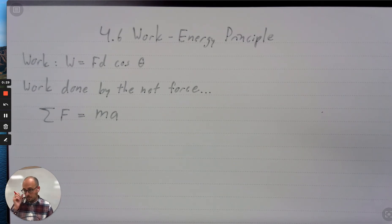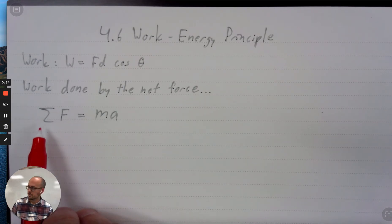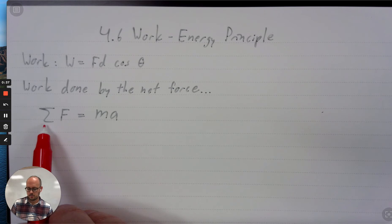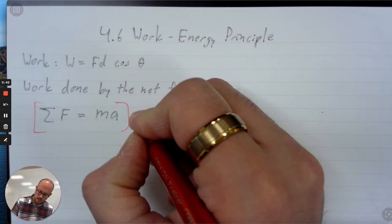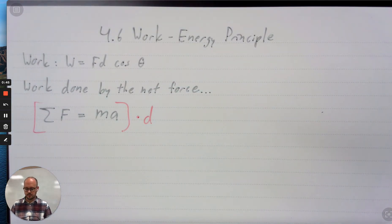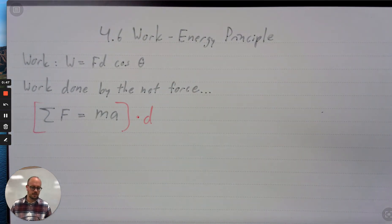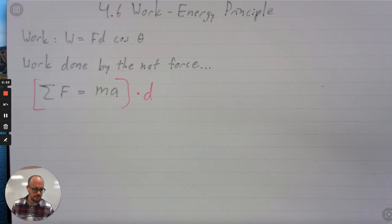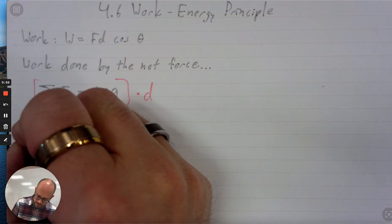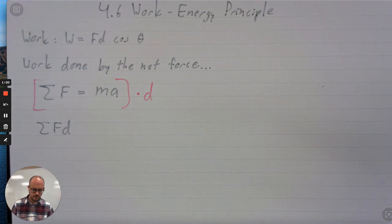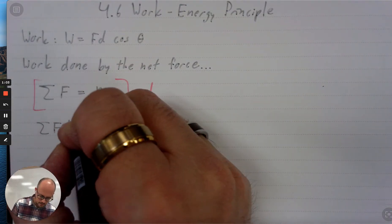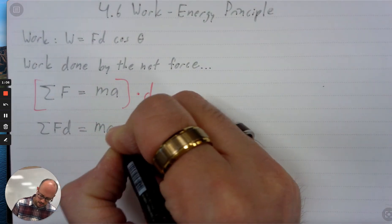And so kind of the way this is derived is a calculus idea, but the way we're going to do is just multiply. So net force equals mass times acceleration. I'm going to take that entire equation and multiply it by a distance. In other words, if this net force causes something to move a distance, now we're going to describe this in terms of distance as well. So on the left-hand side, we get net force times distance, and on the right-hand side, we get mass times acceleration times distance.